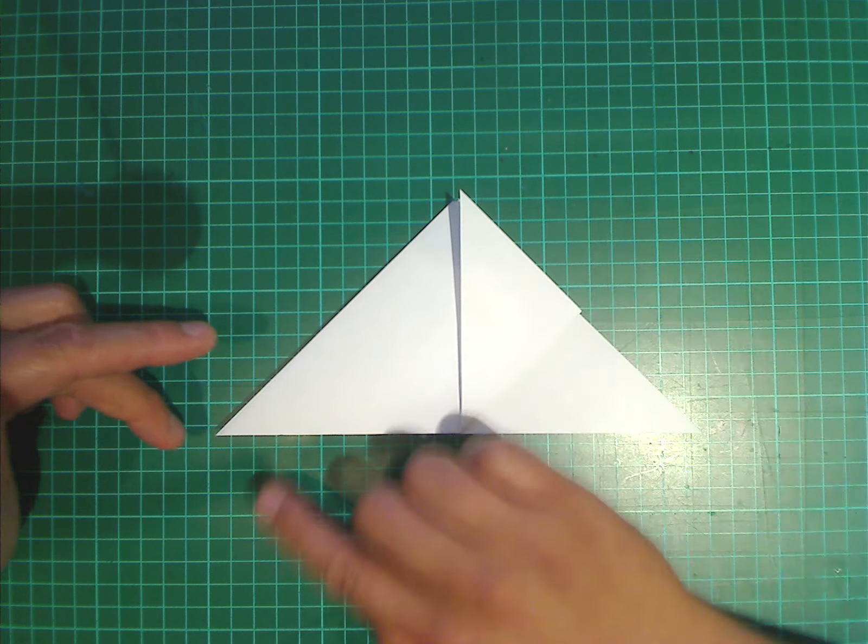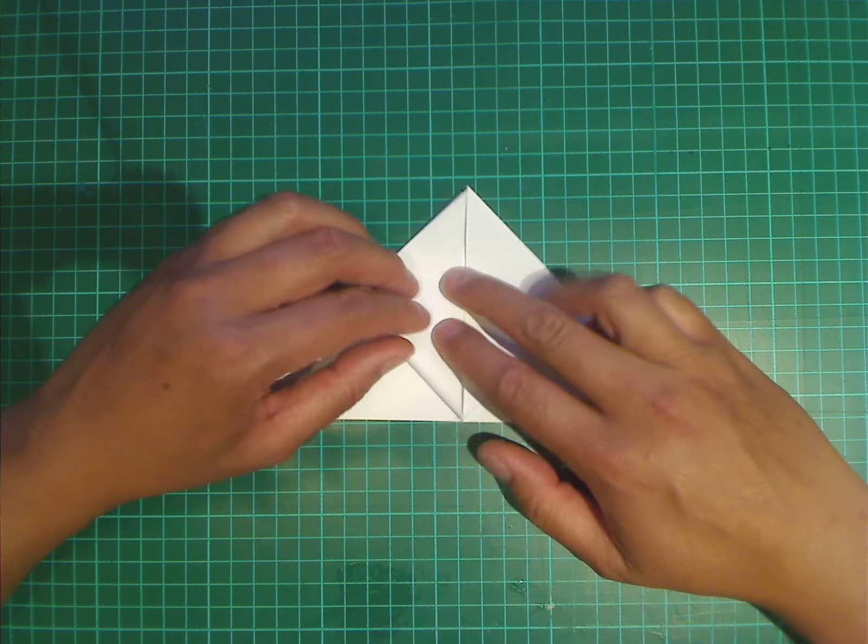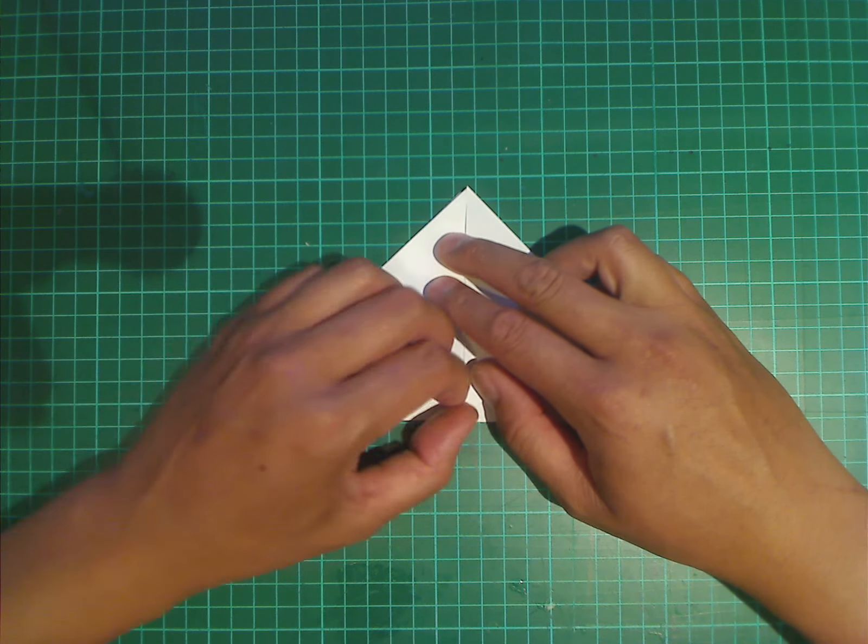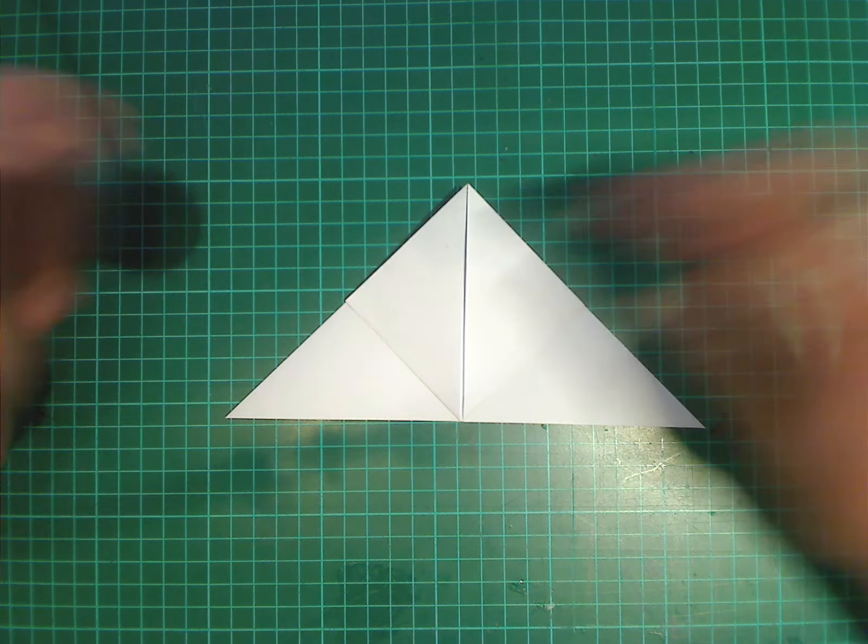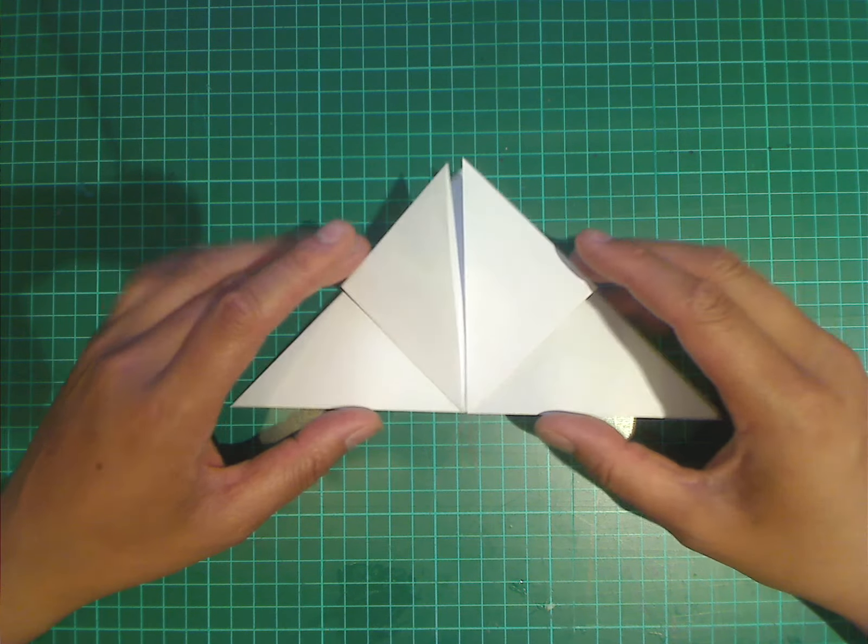We're going to do the same on the left side, by folding this left corner up to the middle point. And make a nice sharp crease. We're then going to turn the model over.